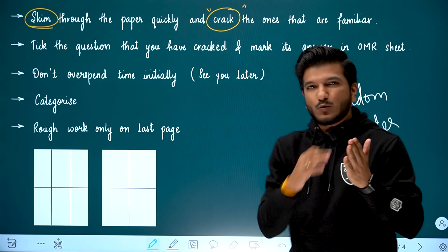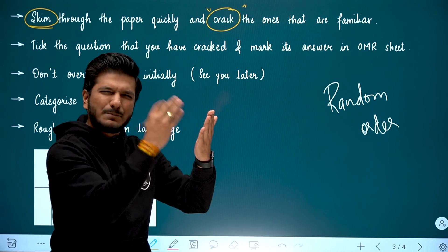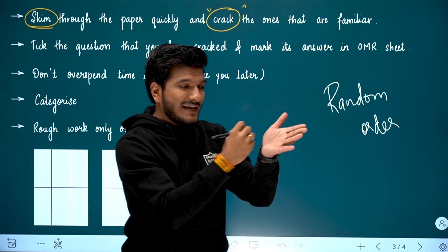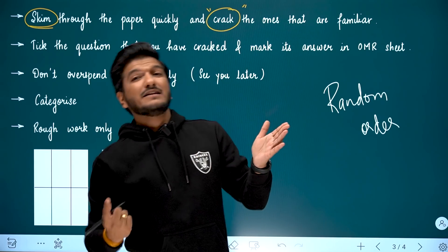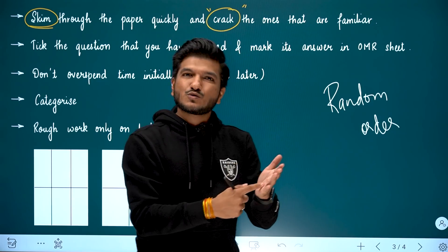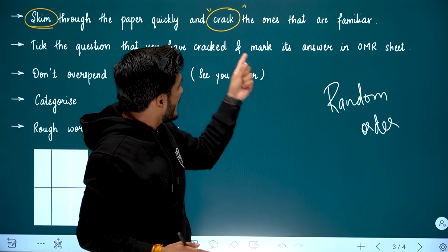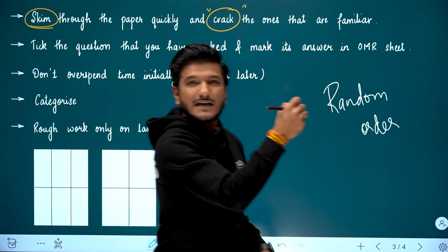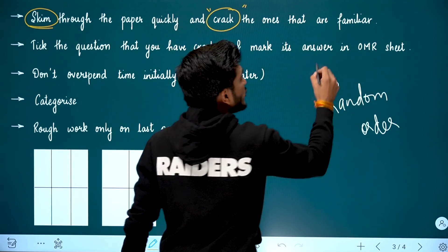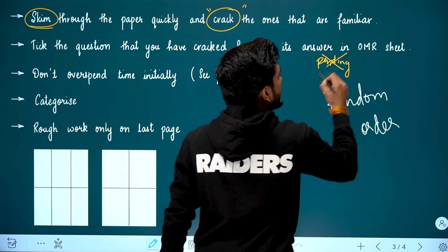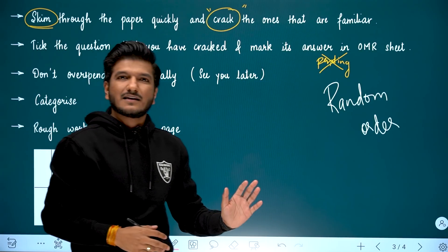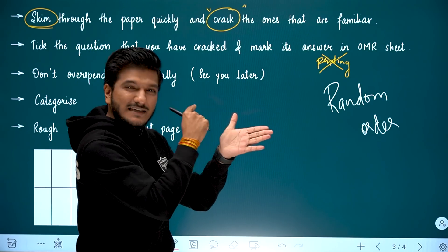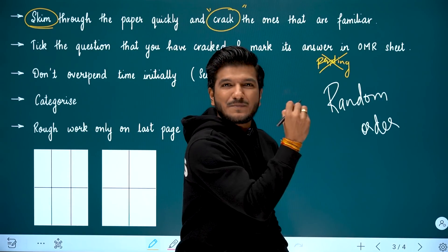Pick the questions you have cracked. When you go through the question paper, you will find questions to skip and questions to attempt. When you solve a question and find the answer, mark the question number. Do not keep it pending. Mark it right away on the OMR sheet — fill in the circle with your HB pencil immediately at the same time.